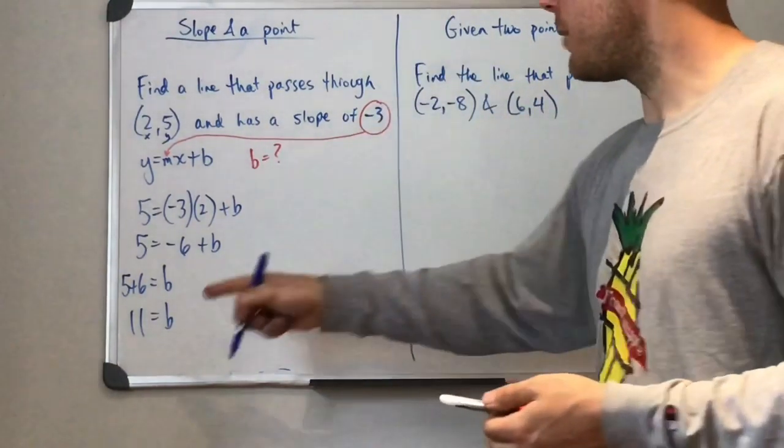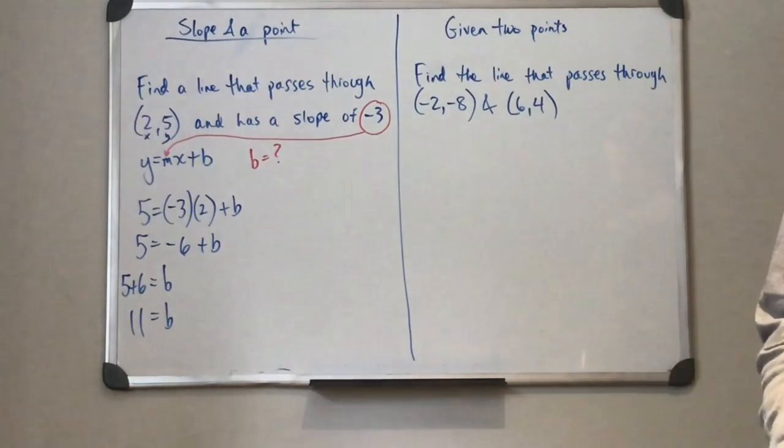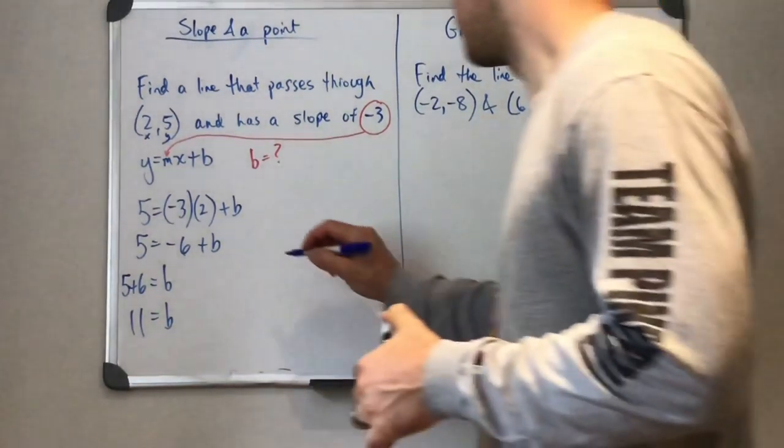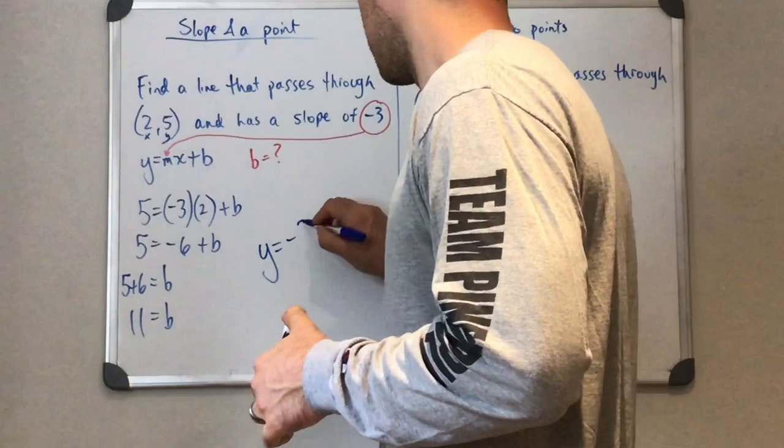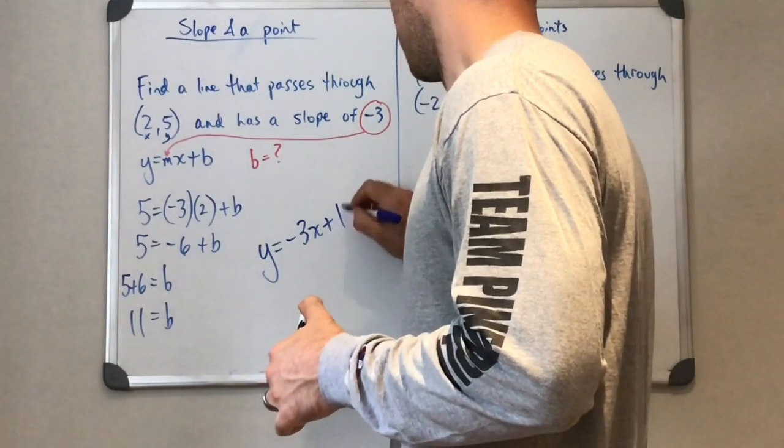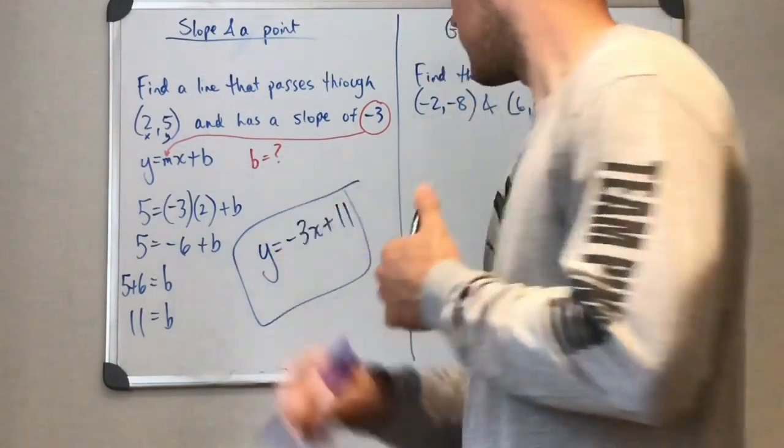And we end up getting 11 for our b. Once we have our slope and our y intercept, we're ready to write out an equation. So we have y equals negative 3x plus 11. All set.